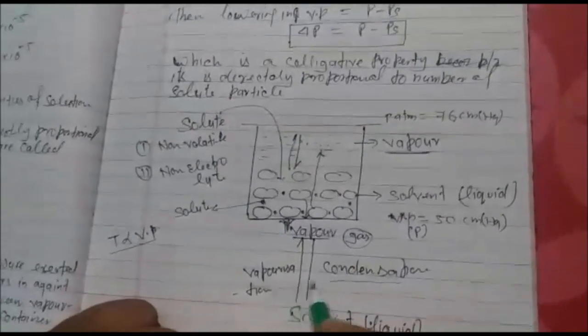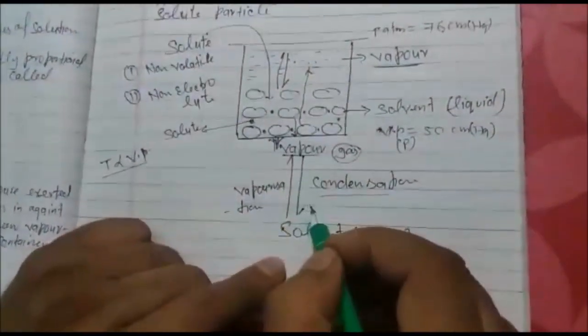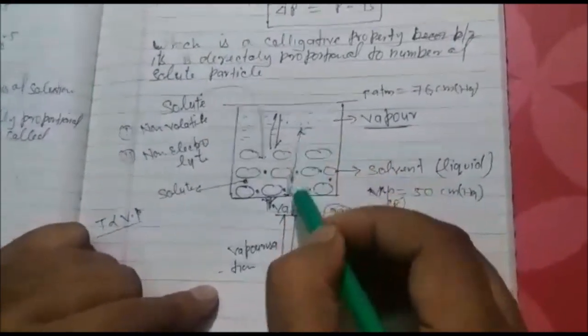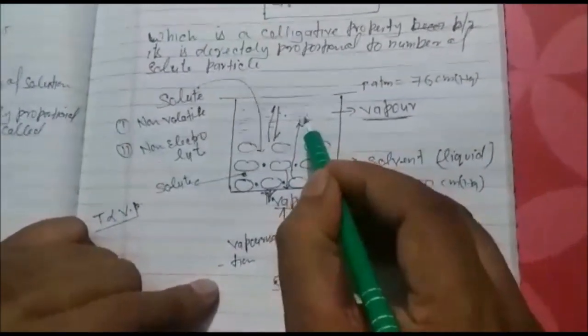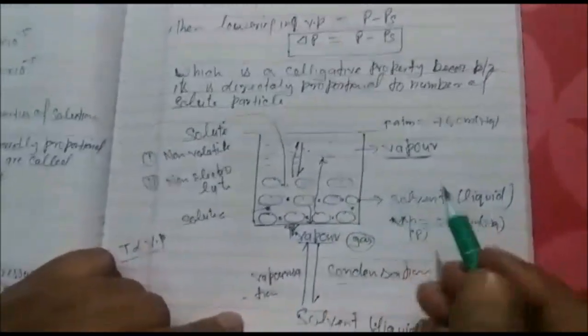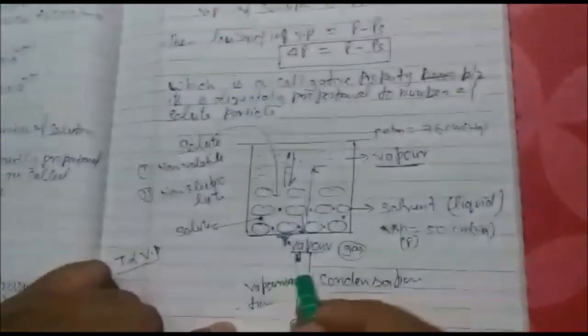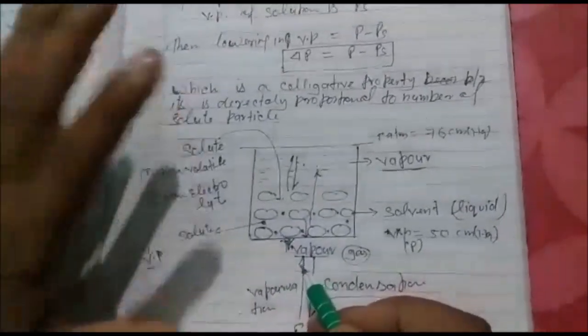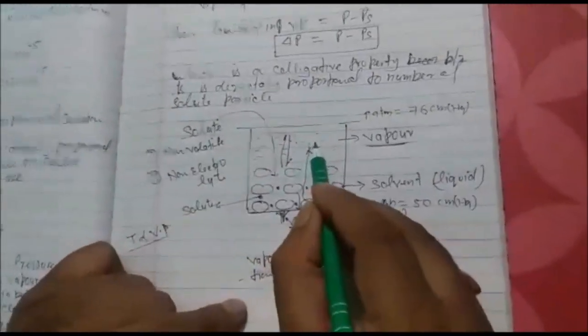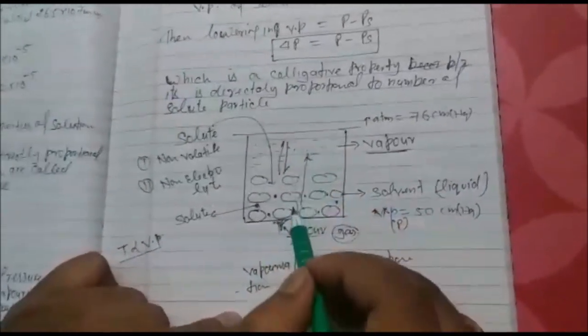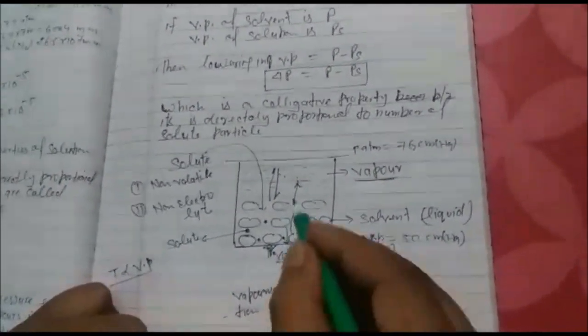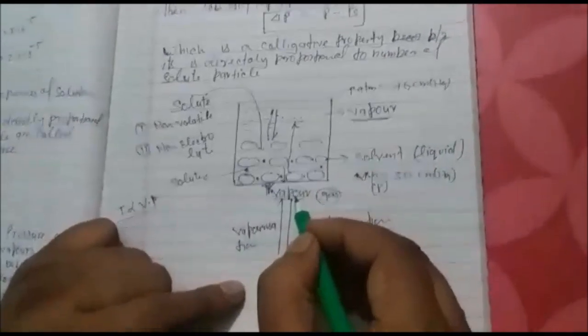At the equilibrium in both vaporization and condensation, the pressure exerted by vapors in against vaporization is called vapor pressure. The 50 is the vapor pressure of solvent. Again understand the topic. What is vapor pressure? The pressure exerted by vapors in against vaporization, at the equilibrium in between vaporization and condensation is called vapor pressure.